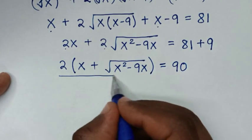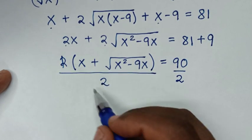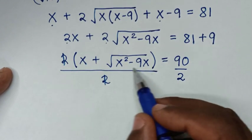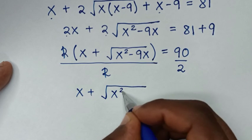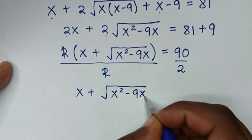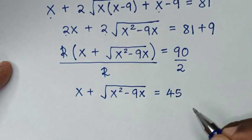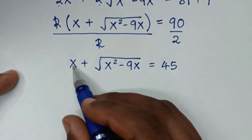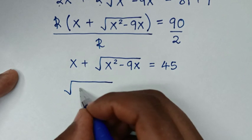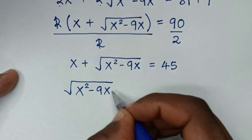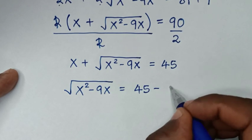Then we'll divide both sides by 2, giving x plus square root of (x²−9x) equals 90 divided by 2, which is 45. Then we take x to the right side, so square root of (x²−9x) equals 45 minus x.